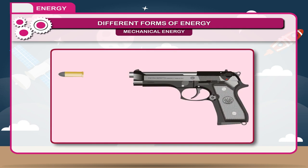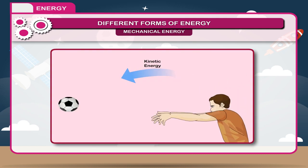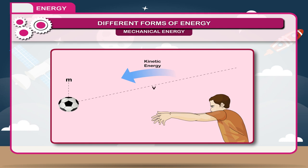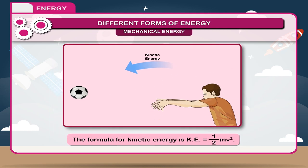A moving car, a bullet fired from a gun, and a ball thrown by a player are examples of kinetic energy. Kinetic energy of a body depends on its mass (m) and velocity (v). The formula for kinetic energy is: KE = ½mv². The kinetic energy is directly proportional to the mass of the body and the square of the velocity.